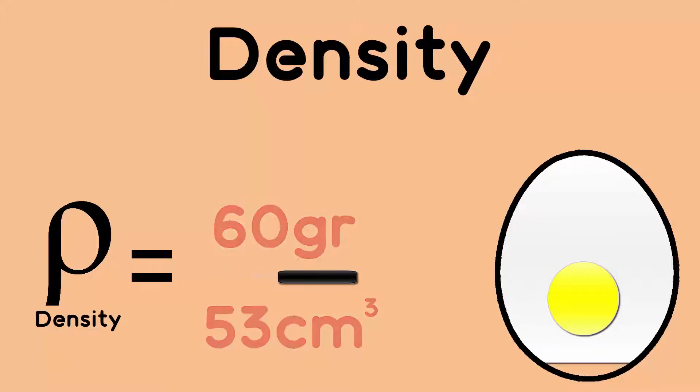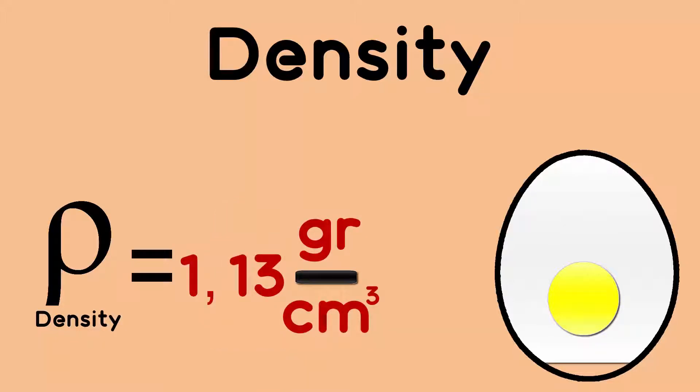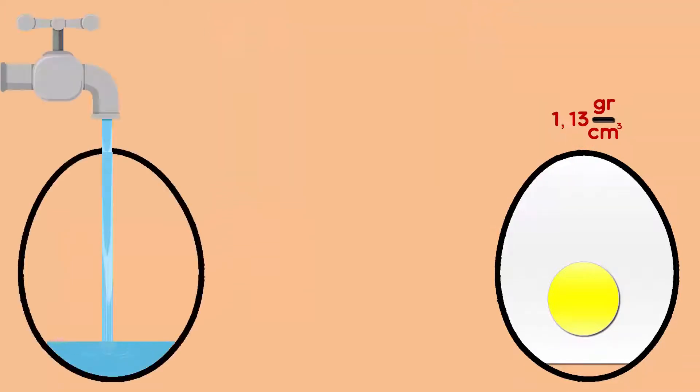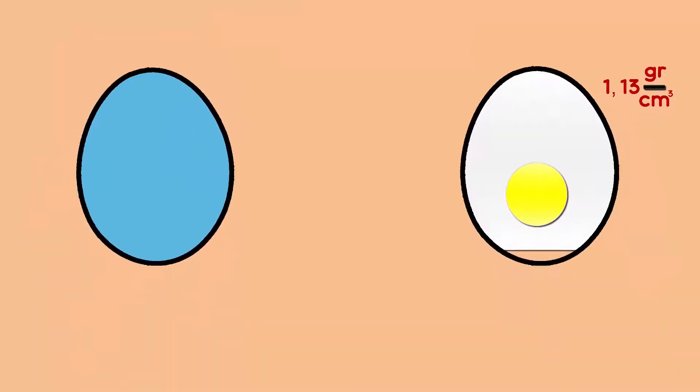That makes a density of 1.13 grams per cubic centimeter. Now we fulfill the same volume of the egg just with water. Which one weighs more?